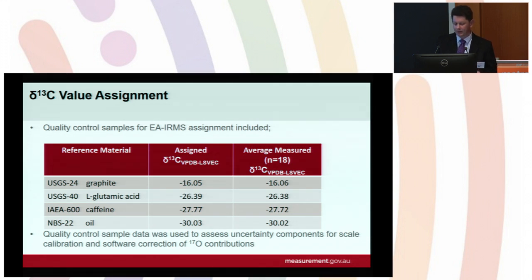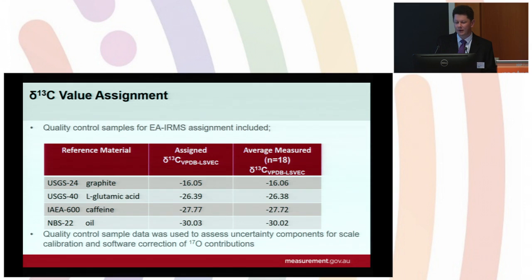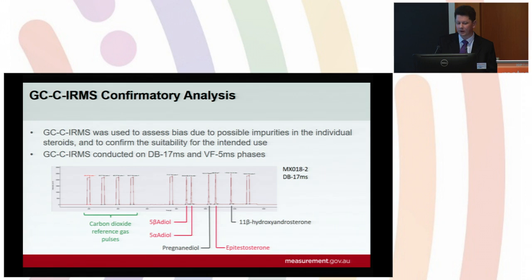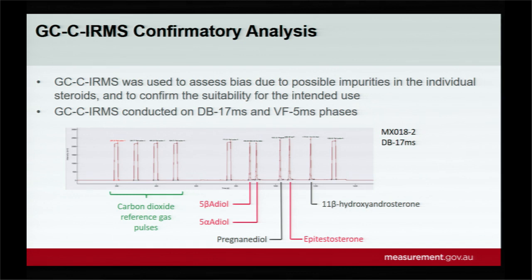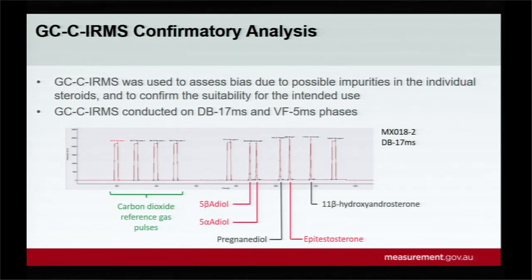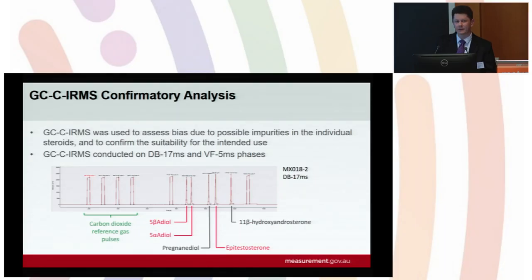We used the quality control sample data to assess the uncertainty component in our scale calibration and also the software correction of oxygen-17 contributions — that contribution to measurement uncertainty is quite low. However, WADA laboratories would never use an elemental analyser to determine a carbon isotope ratio of an athlete sample, so we also analyzed the material by GCC-IRMS to confirm suitability and assess any biases based on possible impurities in the individual steroids, which were sourced from a combination of NMIA in-house high-purity standards and commercial providers.